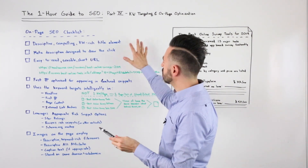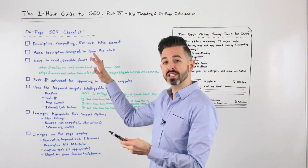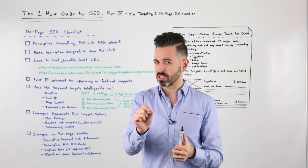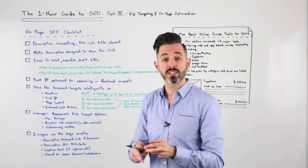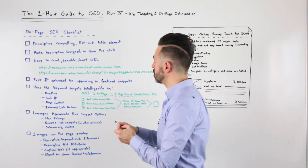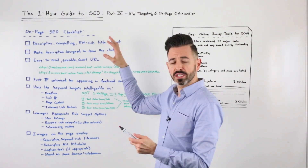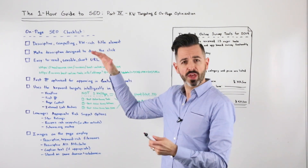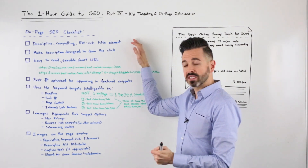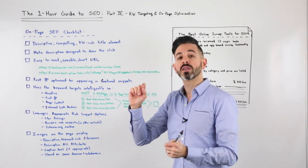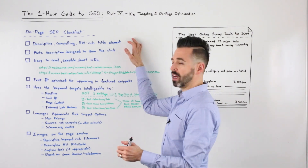I've created a brief on-page SEO checklist. This is not comprehensive, especially on the technical portion — we're saving that for part five, the technical SEO section of this guide. But this checklist covers many of the most important things, including a descriptive, compelling, keyword-rich but not stuffed title element.